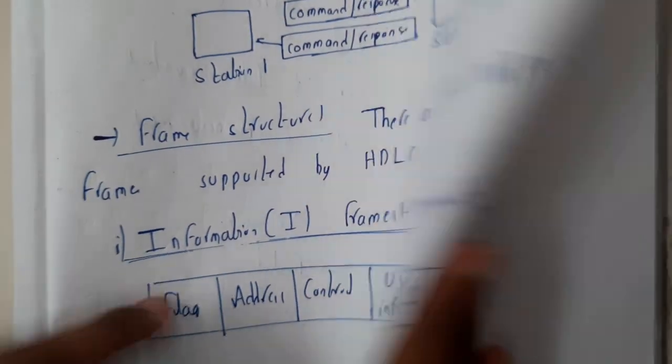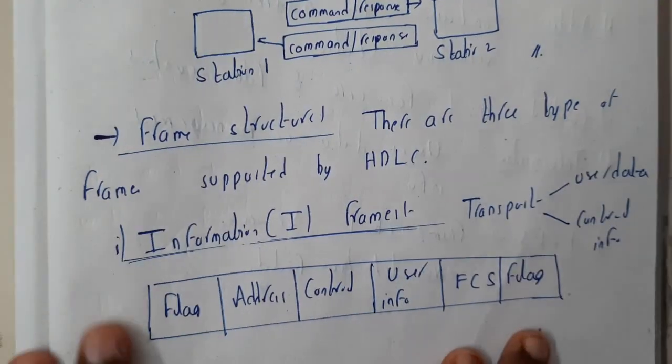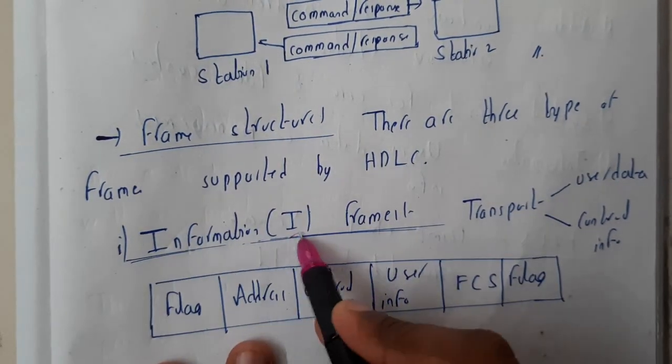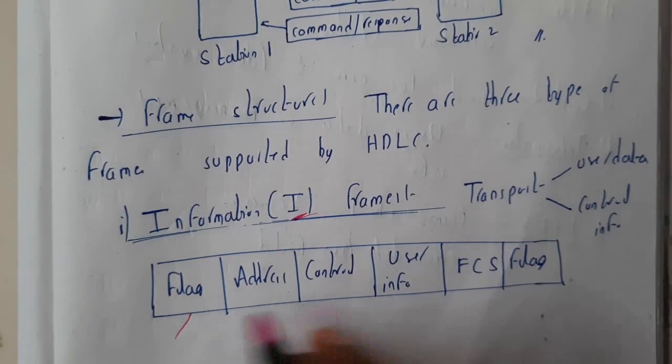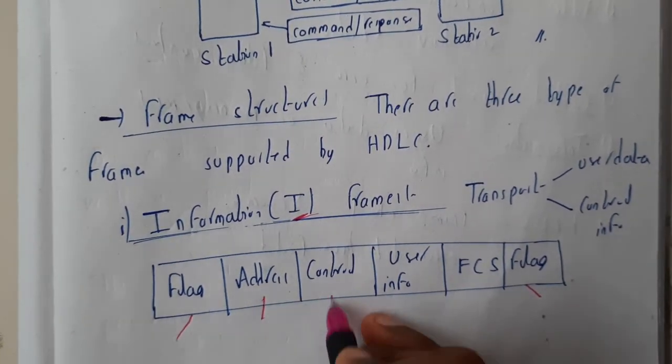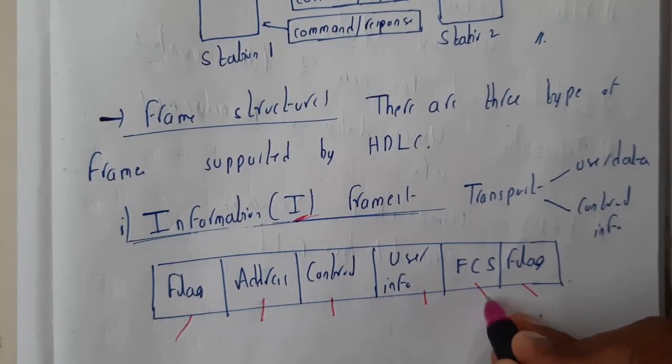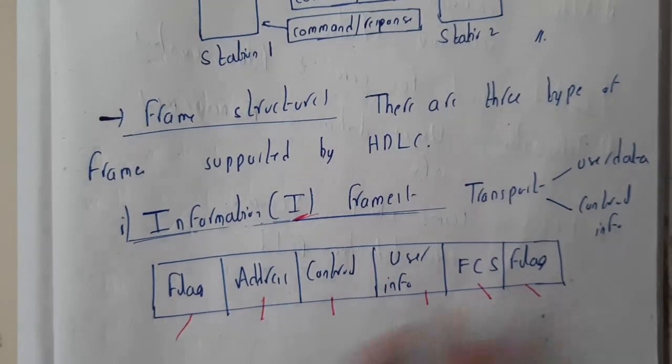There are three types. The first one is informative. The format will be the same at the end and at the start: flag, address, control, user information, and FCS. We'll discuss all the parts.